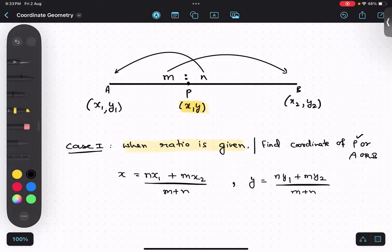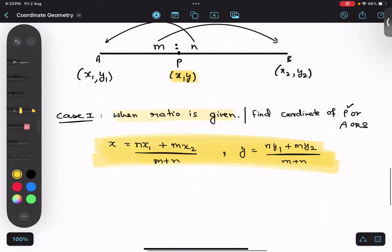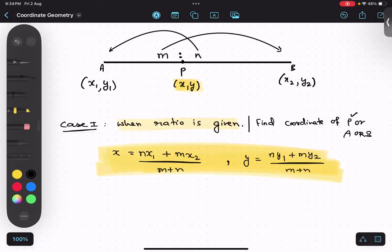Whenever this question comes, what I do is I just draw the diagram. Now if they are asking you point P, they will give A and B. If they are asking you point A, they will give A and P and B. Make sense? So what I'm going to do in each case is I'm going to use this formula. Please quickly take a screenshot of this. And then I'll be doing case number two.